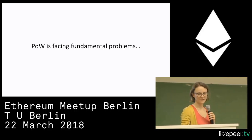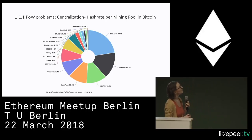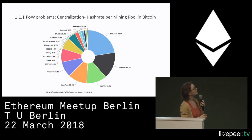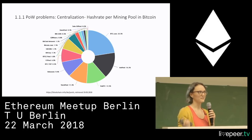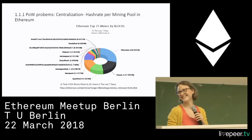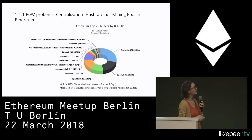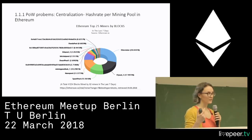POW is facing fundamental problems. The first one is the issue of centralization. Here we see a pie chart of the mining pools in Bitcoin taken last Monday, and we see that there is quite a lot of centralization going on. If we count the top three pools together, they're already more than 51%, which is a threat to the network. And Ethereum is even currently slightly more centralized in terms of mining pool hash rate power per mining pool — Ethermine and F2Pool together are already nearly more than 51%.